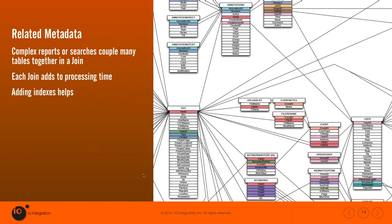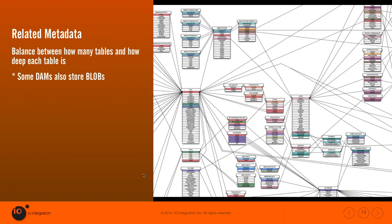The more joins you have or the deeper searches you have, the longer it's going to take to execute and return results. There are ways to manage that by adding indexes, but fundamentally we're still bumping up against a very large number of tables. There's also discussion about how you balance tables and how deep they are. Some asset management systems actually store the file itself in a table — in what's known as a blob or binary large object — which adds to the overall size.